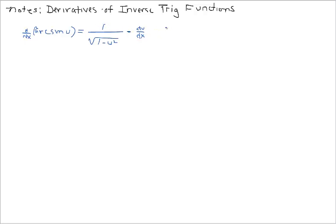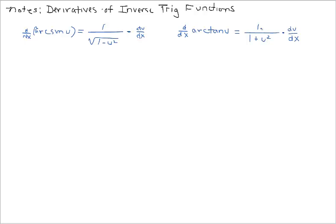Now let's look at the derivative of arctangent. Consider a composite arctangent function that you want to differentiate. The derivative of that composite arctan function is another fraction. The formula we're expected to memorize is 1 over 1 plus u squared — no square root this time — multiplied by u prime, or du over dx. Again in print form you may see du over dx stacked on top of the fraction.